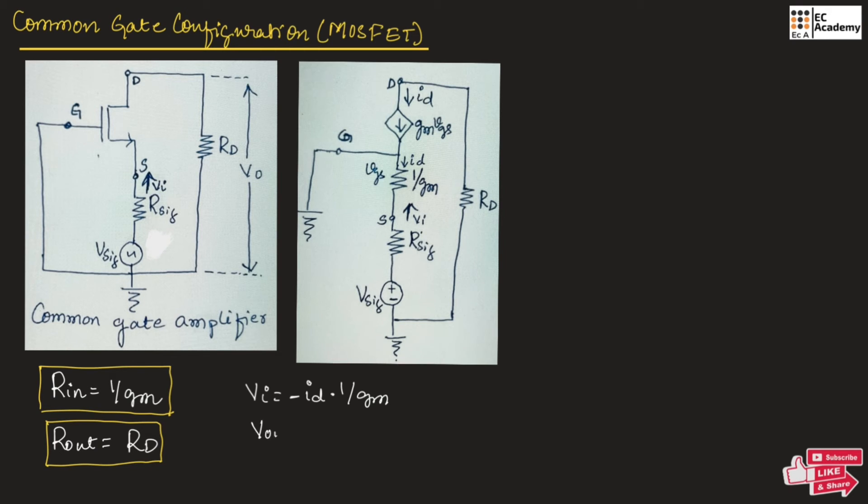Therefore, we can write the voltage gain is equal to output voltage divided by input voltage.